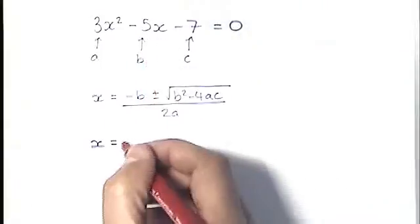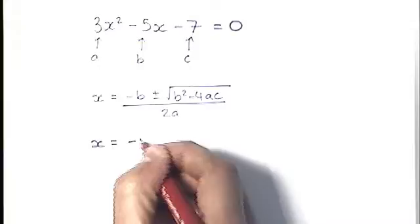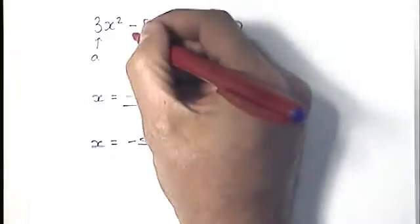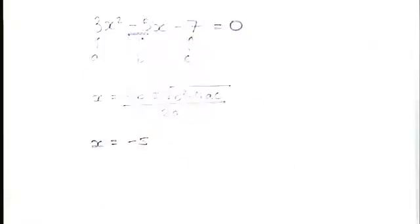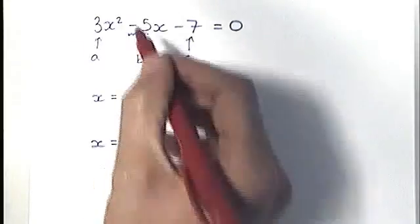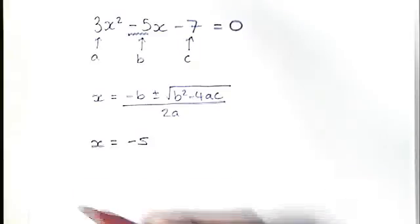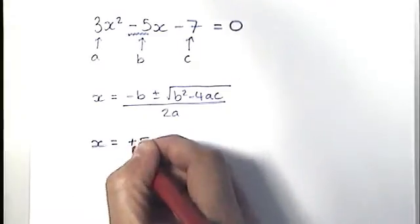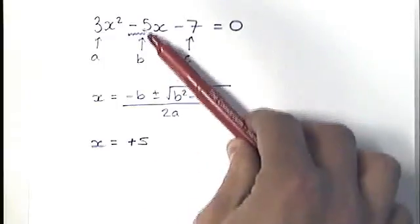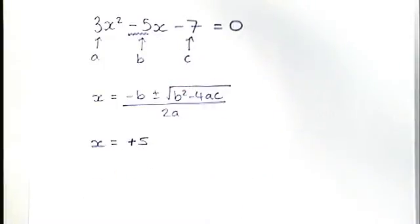The first sign mistake that people will make is here they see a minus b, and they put down minus 5 at this point. That's a mistake because b is already negative. b is a negative 5, and therefore when you do negative negative 5 or take away, subtract negative 5, it ends up being a positive 5.